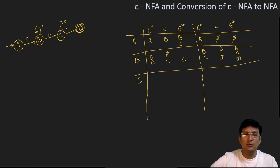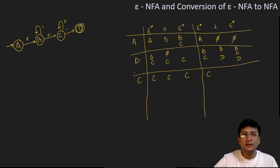Now moving to the transition with C. The epsilon closure of C is just C. C on getting zero remains at state C, and epsilon closure of C is C. Similarly for getting symbol one: epsilon closure of C is C, and on getting symbol one at state C, we move to state D. The epsilon closure of D is just D, since it can only remain at itself.